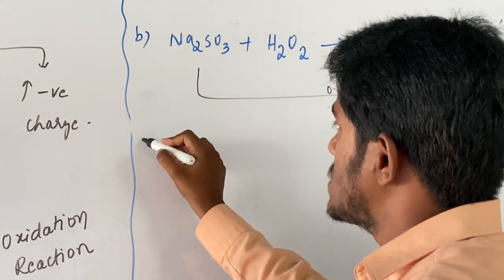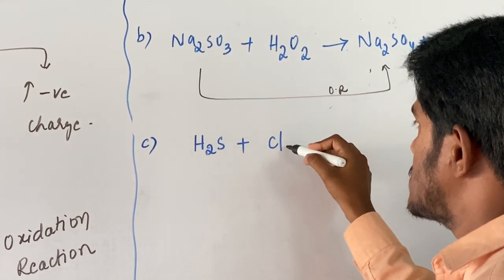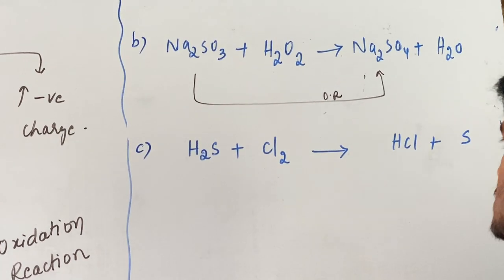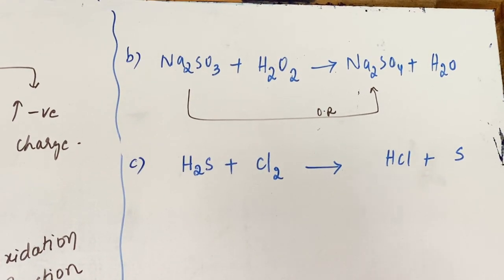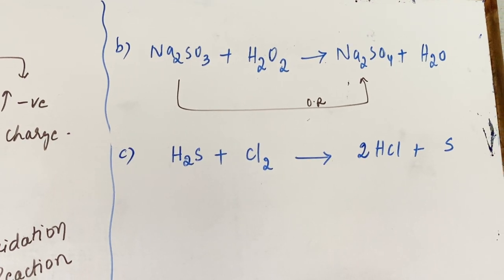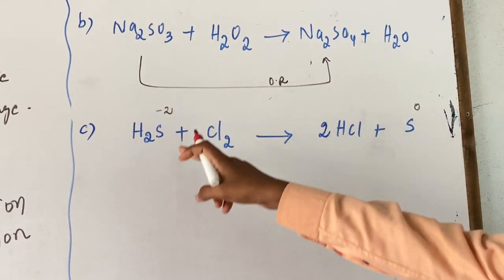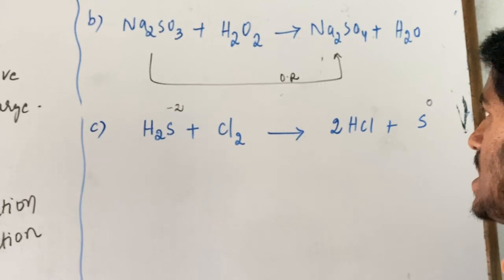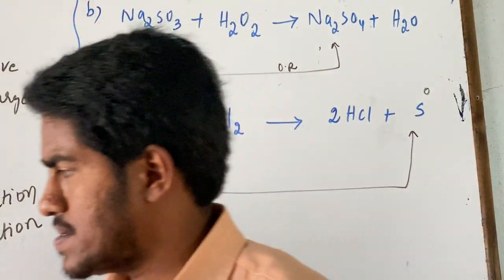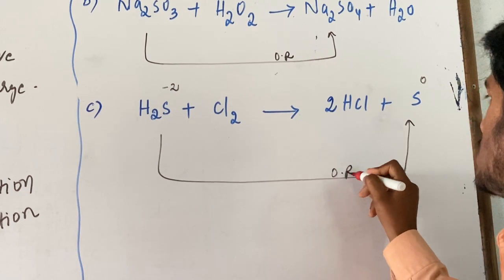One more example: H₂S + 2HCl → S + ... Coming to the balanced reaction, here the sulfur charge on the left is −2, and here the sulfur charge is 0. Decrease in negative charge — hence the reaction is an example of oxidation reaction.